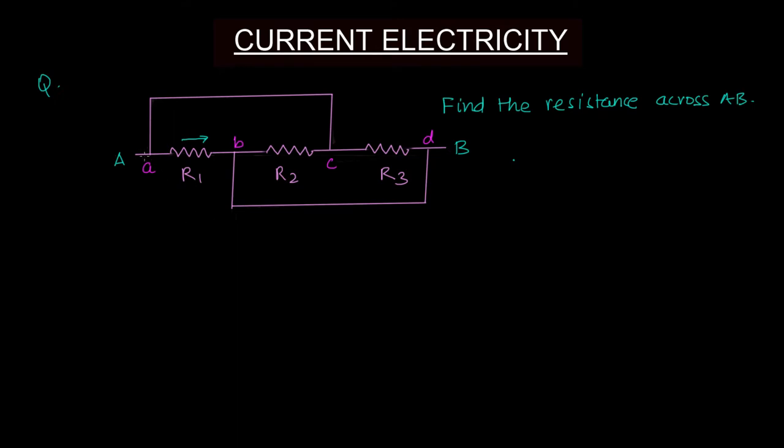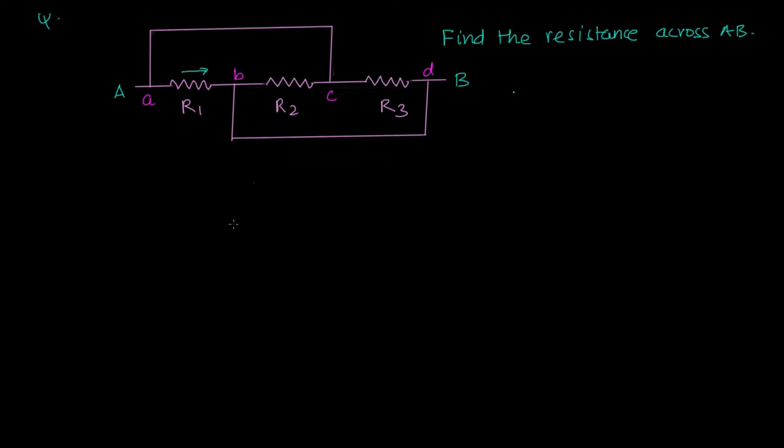Now what happens is you start connecting them electrically. So between a and b you have the terminal a here, and between a and b I have an R1 connected. Now I come to this point.